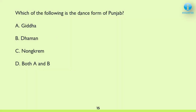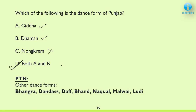Next: Which of the following is the important dance form of Punjab? Giddha and Dhaman are correct, so both A and B are the correct answers. Other important dance forms of Punjab: Bhangda, Dhandas, Dhaaf, Bhand, Nakual, Malvai, and Lodi.